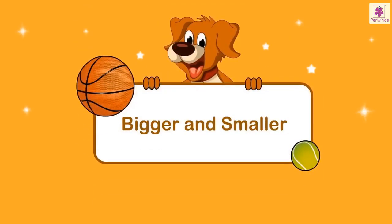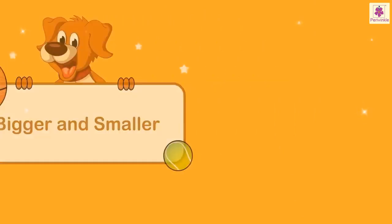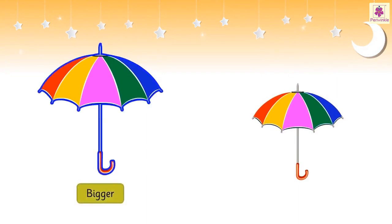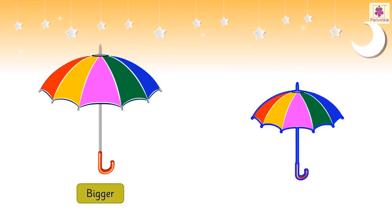Bigger and Smaller. When we have two objects of unequal sizes, then one of the objects is bigger and the other one is smaller.